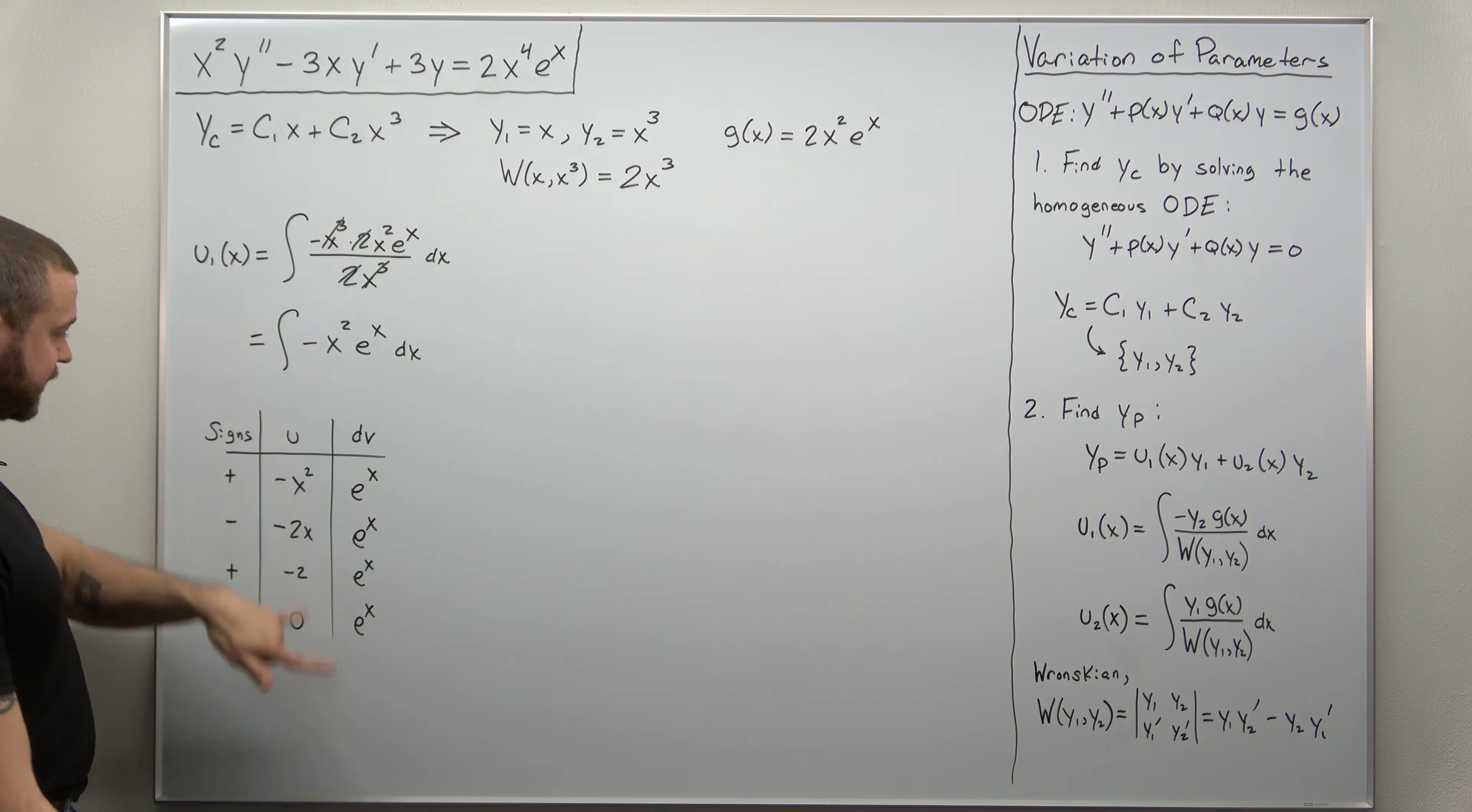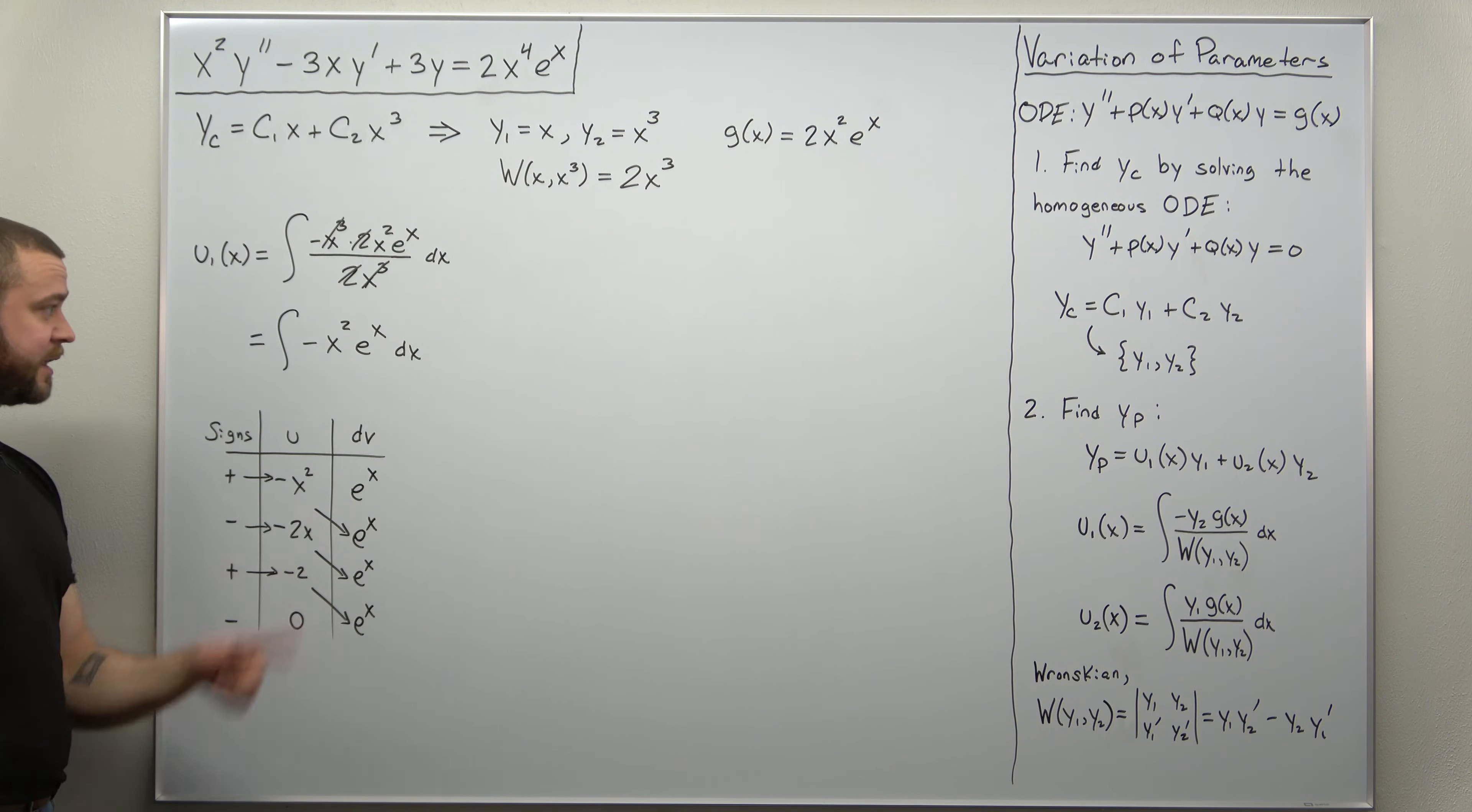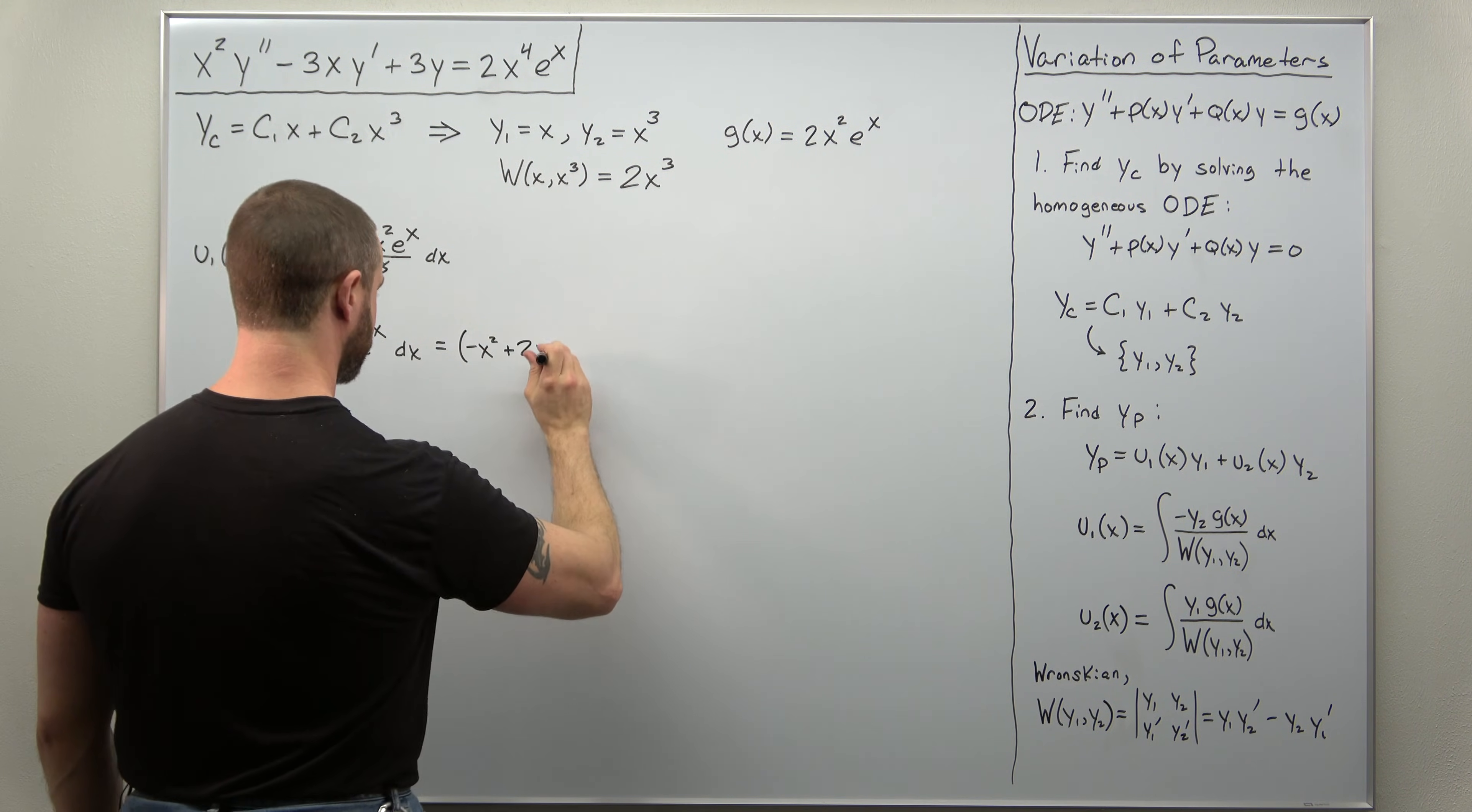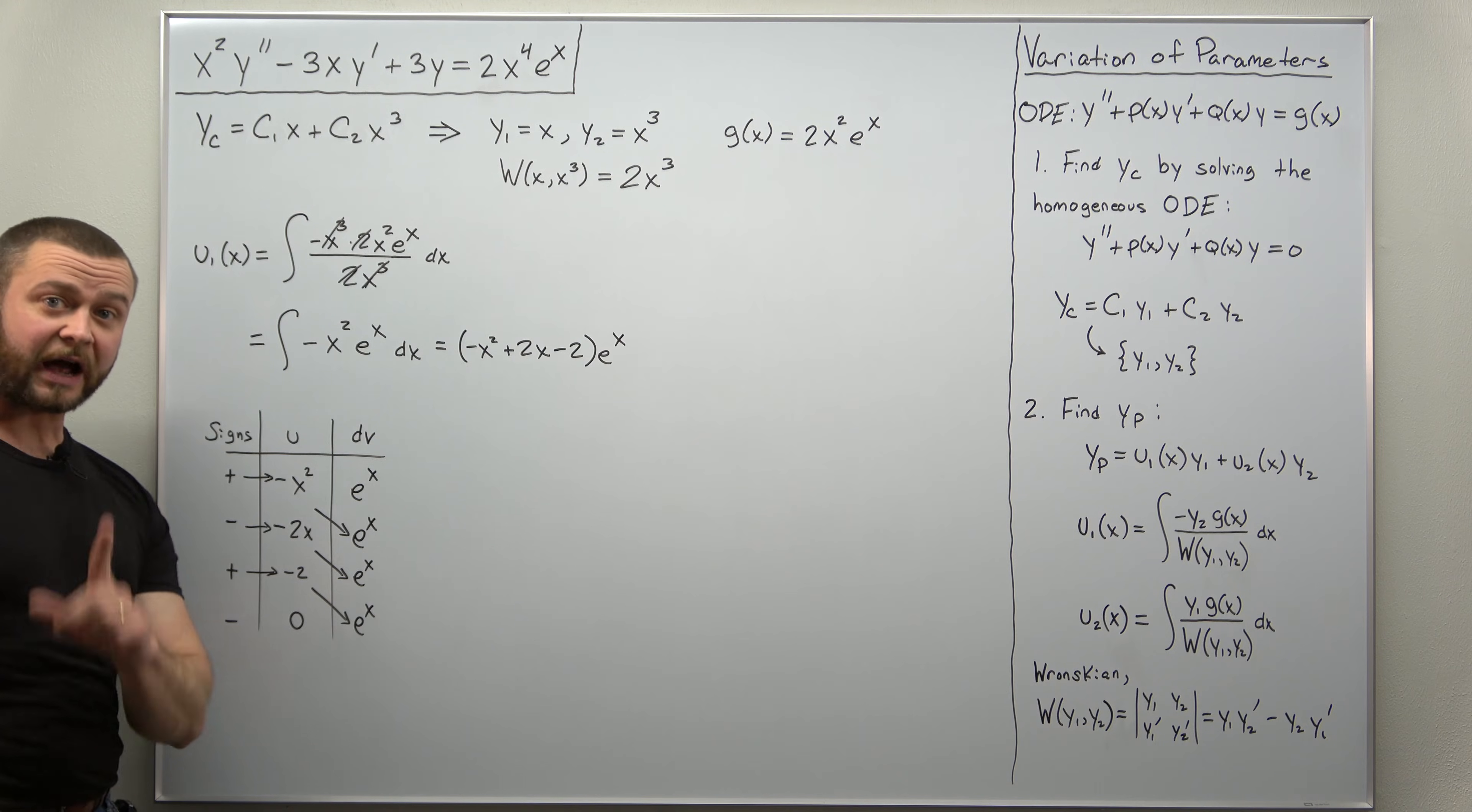All right, we can easily write down what this integral comes out to. Looks like here all my diagonals contain E to the X. So I can factor that out. Looks like we get a minus X squared. Looks like we get a plus 2X. And looks like we get a minus 2. And that's all times E to the X. And that is our U1.